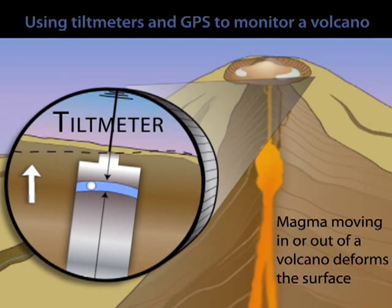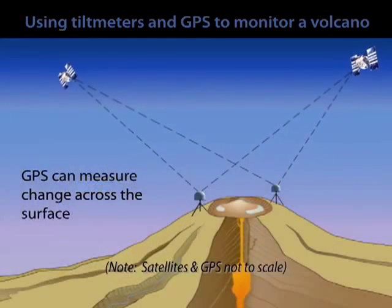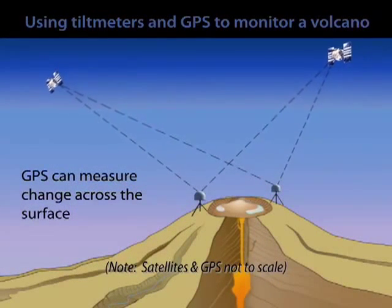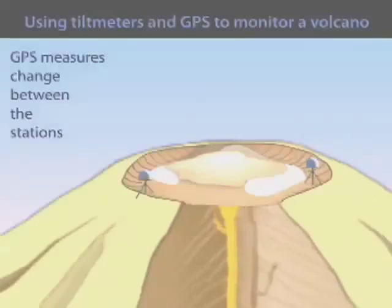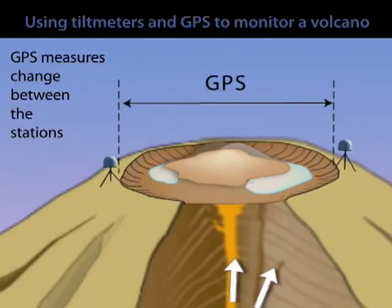Another instrument we use is the Global Positioning System, or GPS. We put several of them out on the volcano, we record signals from satellites orbiting above the earth, and we look for movement of one of the stations with respect to the other.